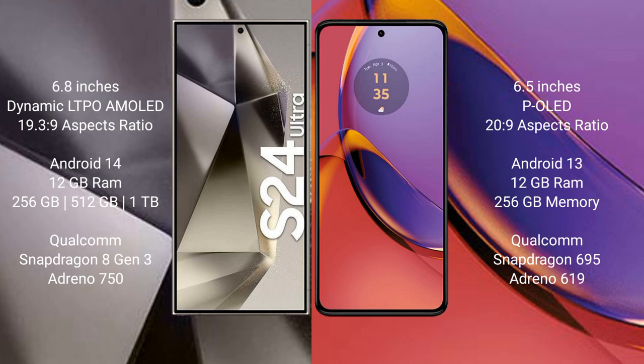Samsung Galaxy S24 Ultra runs on Android 14 operating system; Motorola Moto G84 runs on Android 13. Samsung Galaxy S24 Ultra comes with 12GB RAM and 256GB, 512GB, or 1TB internal storage, Qualcomm Snapdragon 8 Gen 3 processor and GPU Adreno 750. Motorola Moto G84 comes with 8GB or 12GB RAM and 256GB internal storage, Qualcomm Snapdragon 695 processor and GPU Adreno 619.